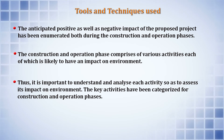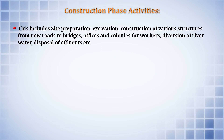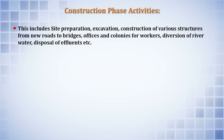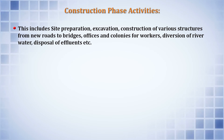The construction phase comprises various activities including site preparation, excavation, construction of structures such as new roads, bridges, offices, and worker colonies, diversion of river water, and disposal of effluents. Since construction activities can span one year or more, normal working activities for residents and offices should not be affected, so diversion plans and new road and bridge construction also need to be described in the project proposal.